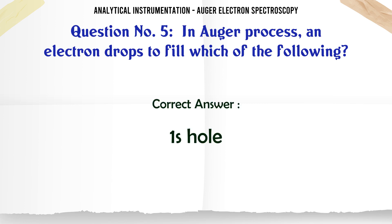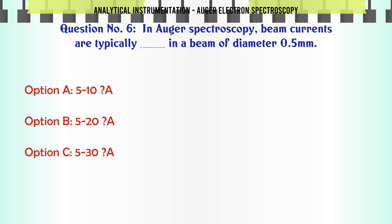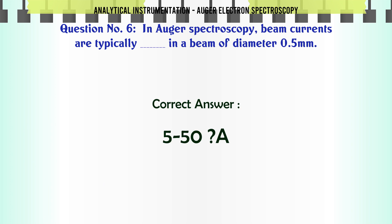In Auger spectroscopy, beam currents are typically in a beam of diameter 0.5 mm. A. 5-10 A. B. 5-20 A. C. 5-30 A. D. 5-50 A. The correct answer is 5-50 A.